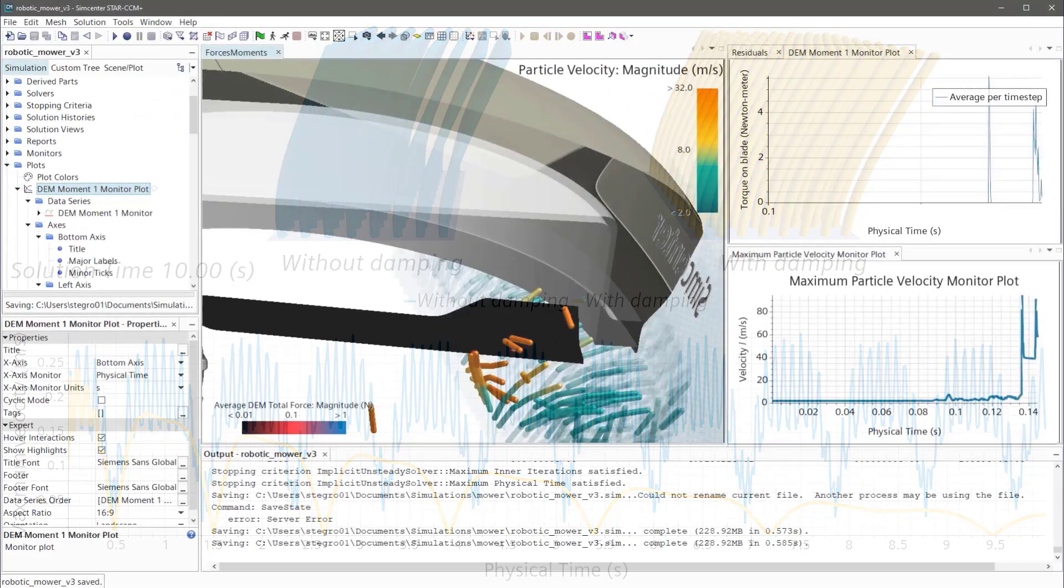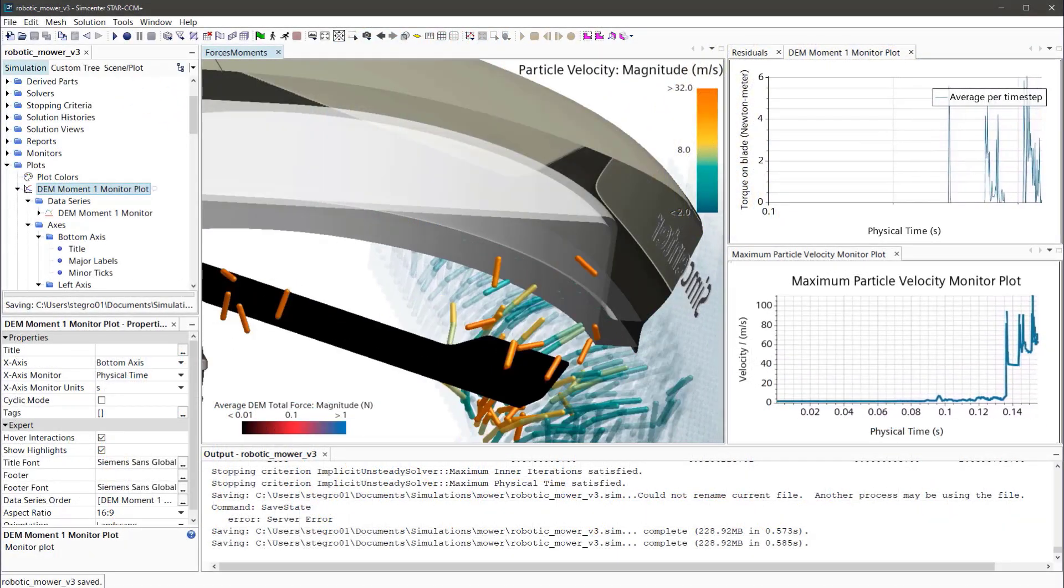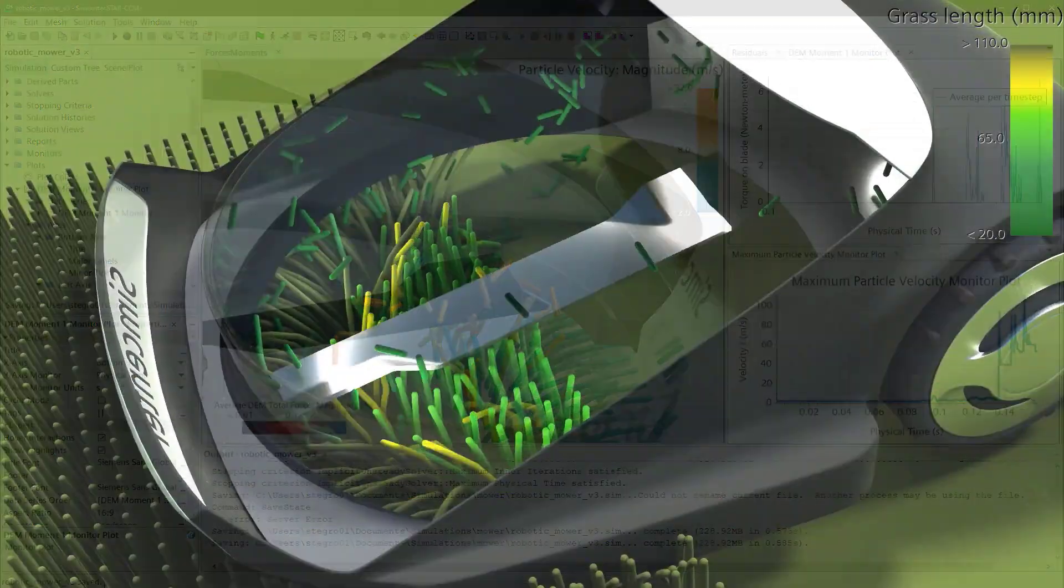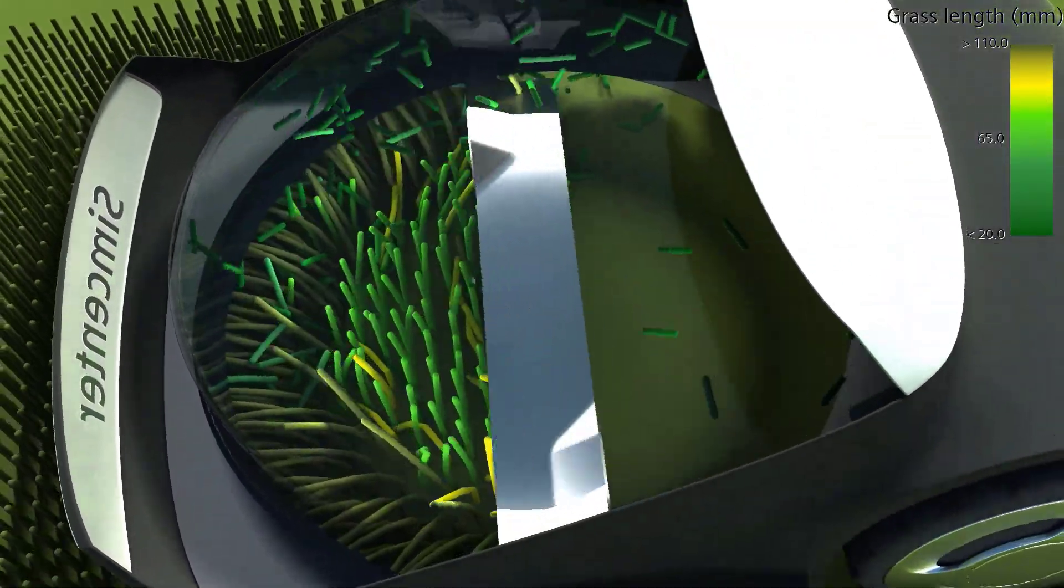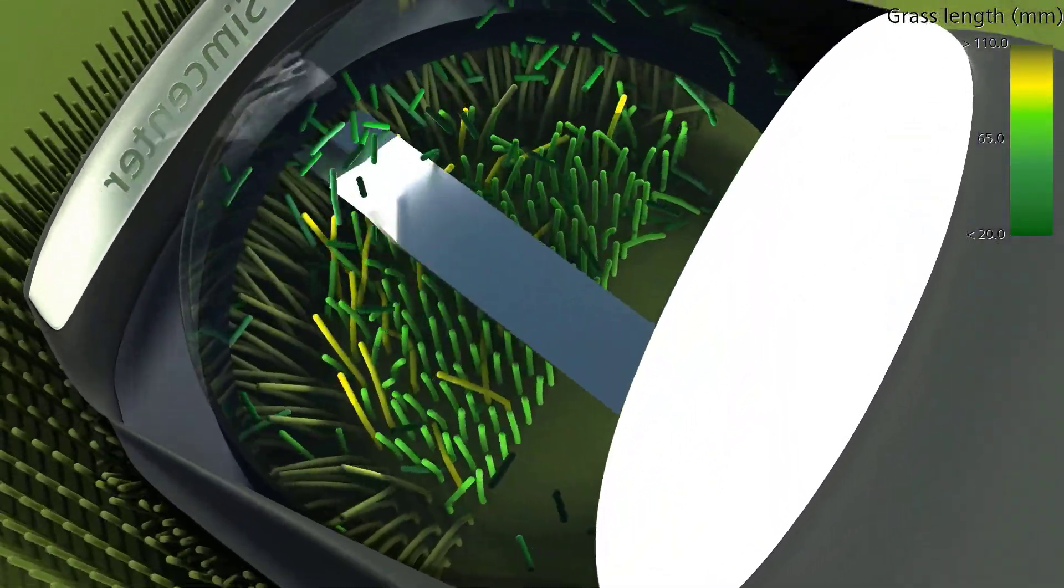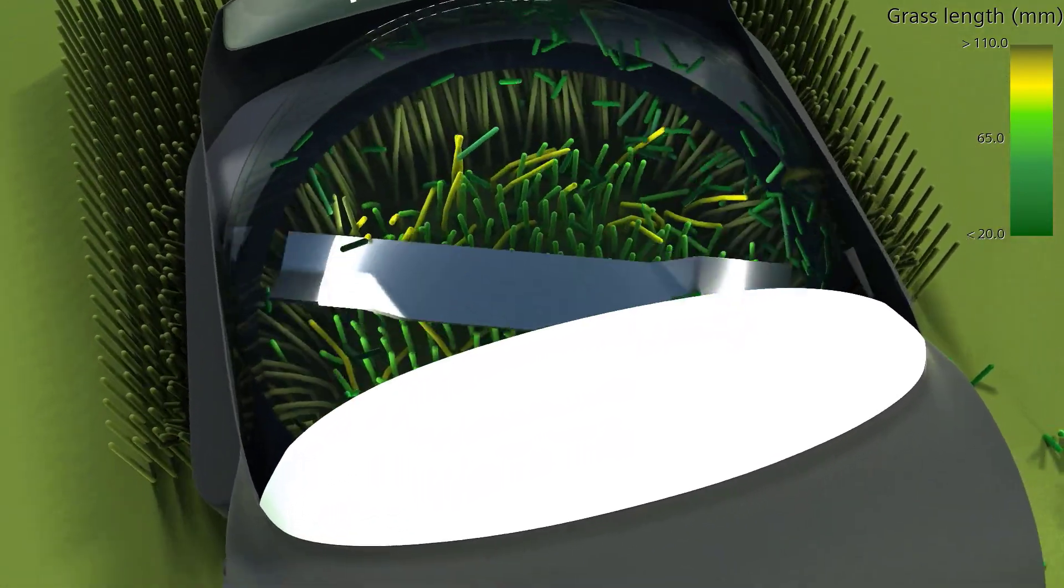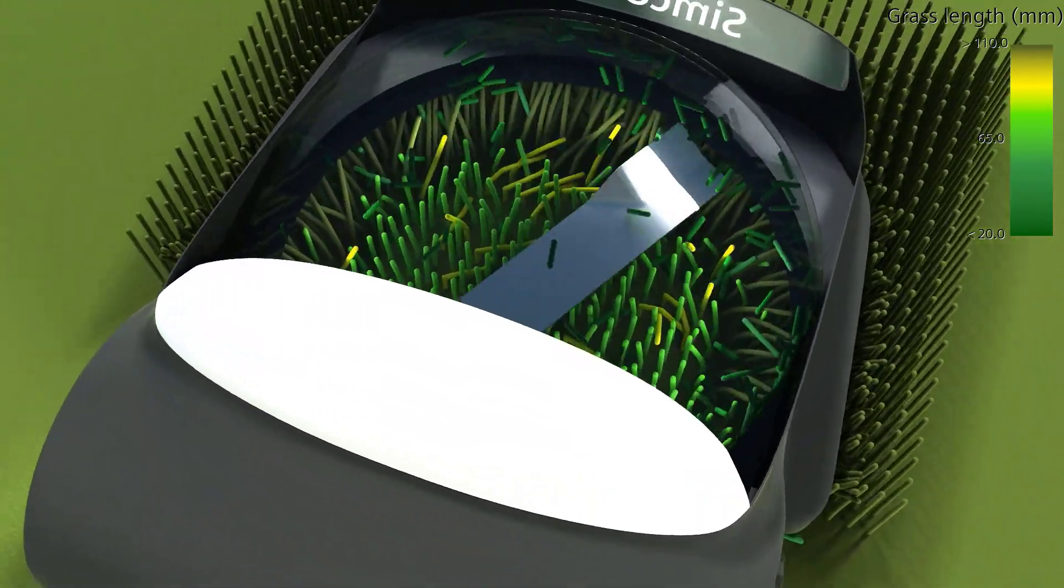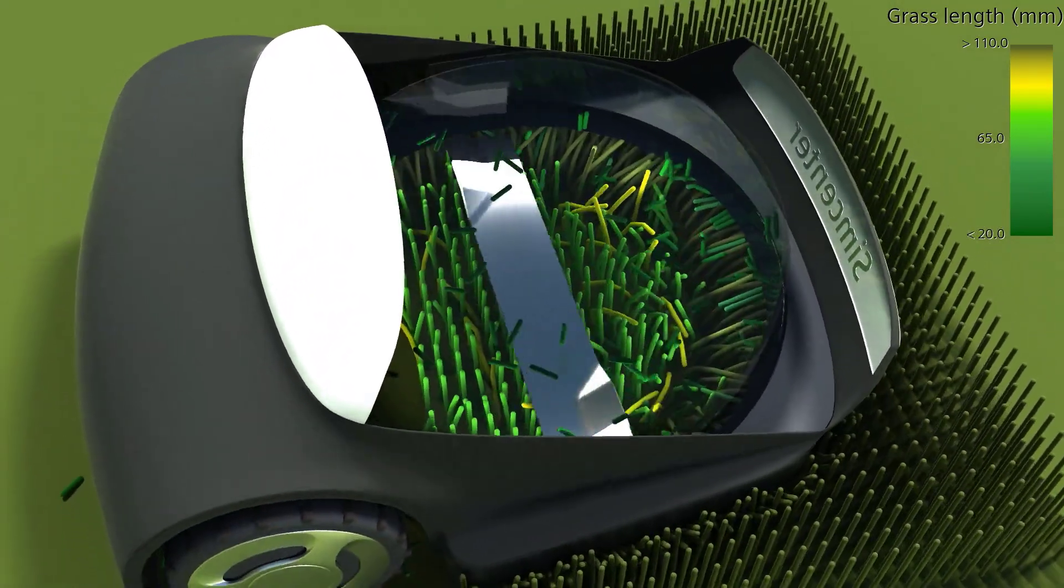The flexible fibers with damping make your DEM simulations more accurate and stable. Together those enhancements allow for faster simulations of complex physics of bulk materials to explore the possibilities for better agricultural and process equipment.